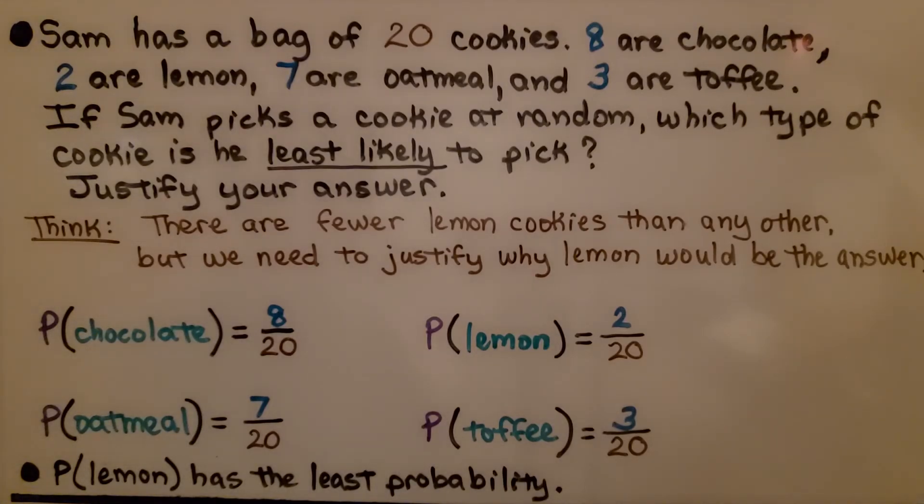Sam has a bag of twenty cookies. Eight are chocolate, two are lemon, seven are oatmeal, and three are toffee. If Sam picks a cookie at random, which type of cookie is he least likely to pick? Justify your answer.